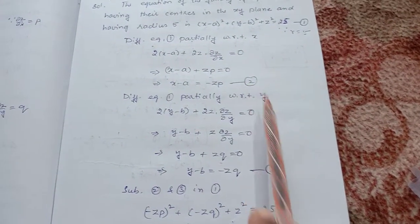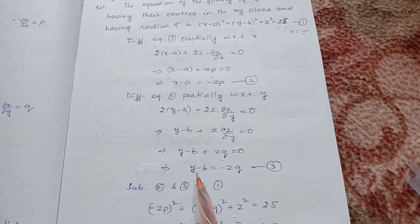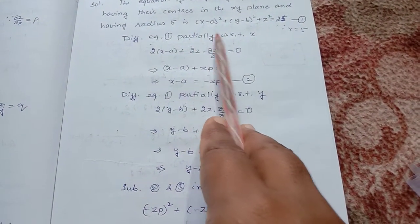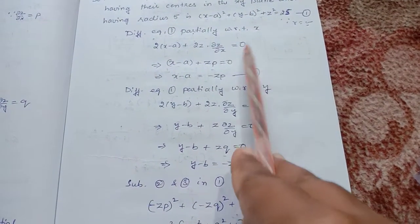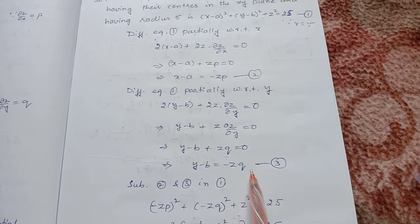Substituting equation 2 and equation 3 in equation 1: (x - a) value is -zp, so (-zp)² plus (y - b) value is -zq, so (-zq)²